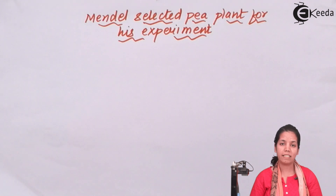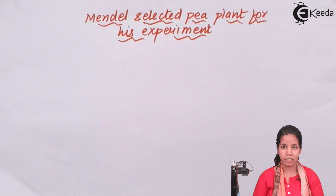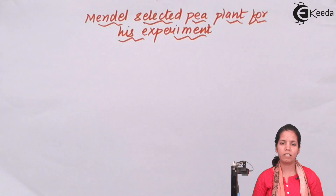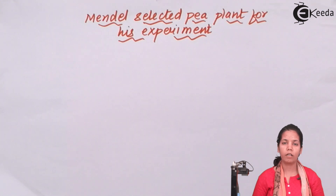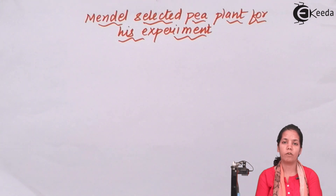Pea plant has the scientific name Pisum sativum. Gregor Mendel was the father of genetics. Did he get a Nobel Prize for his findings? No, he did not. His experiments were recognized only later, after his death, and he was then called the father of genetics.